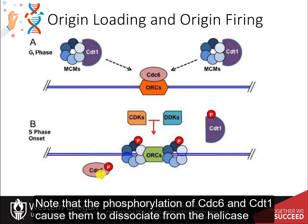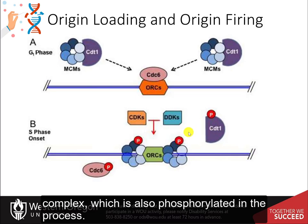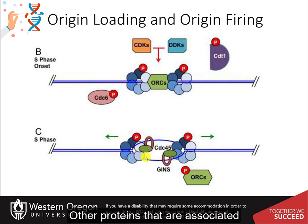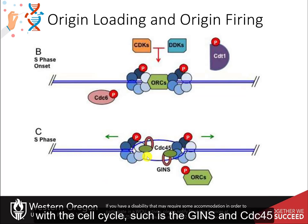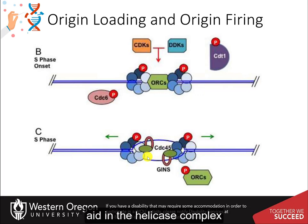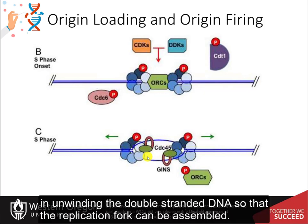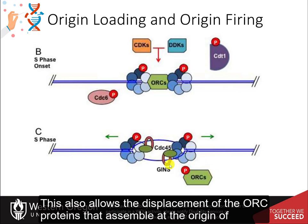The phosphorylation of CDC6 and CDT1 causes them to dissociate from the helicase complex, which is also phosphorylated in the process. Other proteins associated with the cell cycle, such as GINS and CDC45, aid the helicase complex in unwinding the double-stranded DNA so that the replication fork can be assembled. This also allows the displacement of the ORC proteins that assemble at the origin of replication.